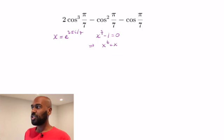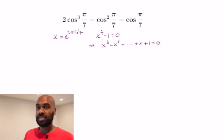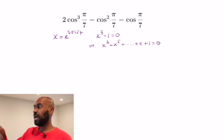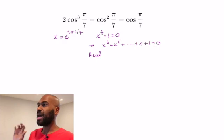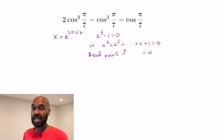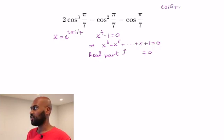Now the expression x^6 + x^5 + ... + x + 1 is a factor of x^7 minus 1, and since x = e^(2πi/7) is not equal to 1, x is actually a root of this equation. To extract a relationship for cosine, we extract the real part of that expression. Since x^6 + x^5 + ... + 1 = 0, the real part of it is 0 as well.